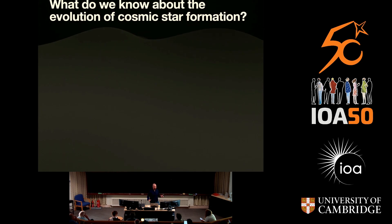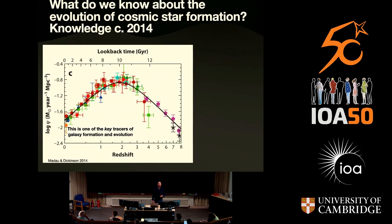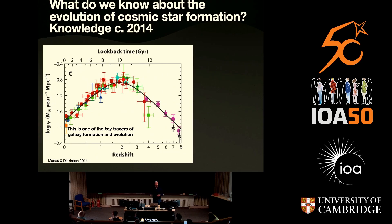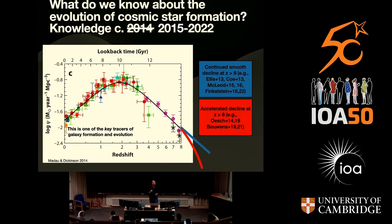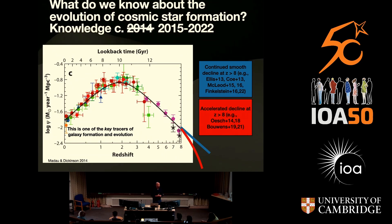One plot to summarize where the field was before JWST is the star formation rate density from the McDowell and Dickinson review in 2014. It shows the characteristic shape: starting today going into the past, there's a rise in the cosmic star formation rate density, reaching a peak about 10 billion years into the past, then falling off towards earlier times. Hubble's wide-field camera 3 surveys were allowing us to really measure this quantity at redshift 7 and 8 for the first time. When we look at redshift 8, 9, and 10 with Hubble before JWST, there was some disagreement — some people found a continued smooth decline, while other groups saw evidence of an accelerated decline, a paucity of galaxies at redshift greater than 8, which would mean not much to see with JWST unless you went ultra-deep.